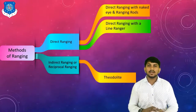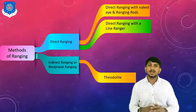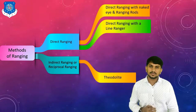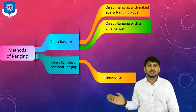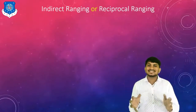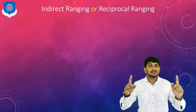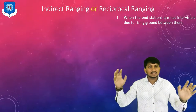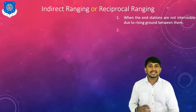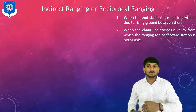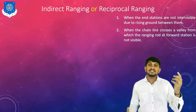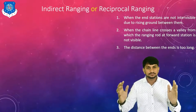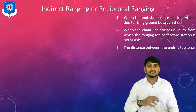That is all about direct ranging when stations are inter-visible. When stations are not inter-visible, indirect ranging or reciprocal ranging is used, typically done with an instrument called a theodolite. There are three conditions where indirect ranging is used: first, when end stations are not visible due to rising ground; second, when a chain line crosses a valley; and third, when the distance between two end stations is too long to see each other.